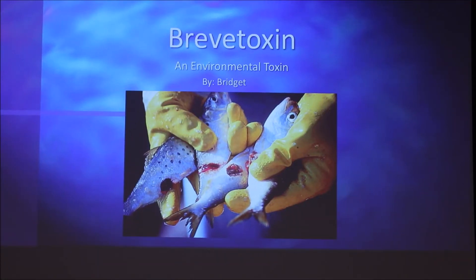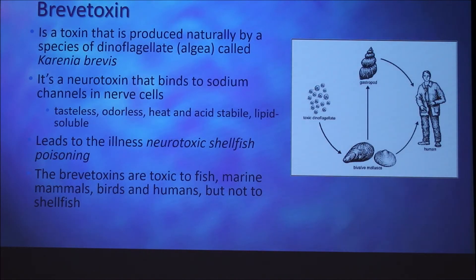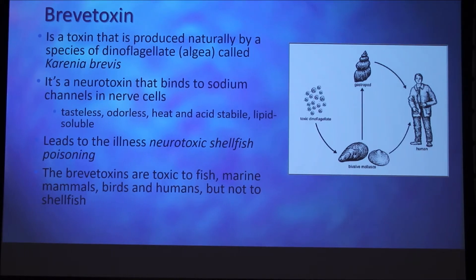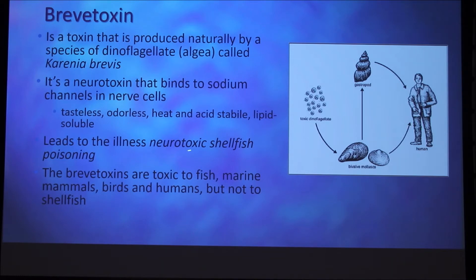The environmental toxin I'm going to be talking about today is called brevetoxin. It creates lesions in fish. It is a naturally produced toxin produced by a species of dinoflagellates or algae called Karenia brevis. It's a neurotoxin that binds to sodium channels in nerve cells. It's tasteless, odorless, heat and acid stable, and lipid soluble. It leads to the illness called neurotoxic shellfish poisoning. Brevetoxins are toxic to fish, marine mammals, birds, and humans, but not to shellfish. That's how they spread to humans — the dinoflagellates infect mussels or shellfish which humans consume, and in high doses it leads to neurotoxic shellfish poisoning.